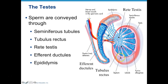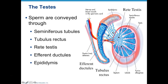Inside the testes, we have tiny tubules — think of them like little ramen noodles — and sperm is created within these seminiferous tubules. Sperm moves out from the seminiferous tubules into the tubulus rectus, with each seminiferous tubule having its own tubulus rectus. That moves into the mesh-like area called the rete testis. From there, sperm moves into the eight efferent tubules and into the epididymis, where it matures.